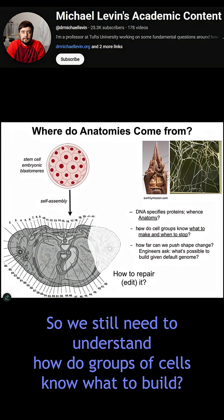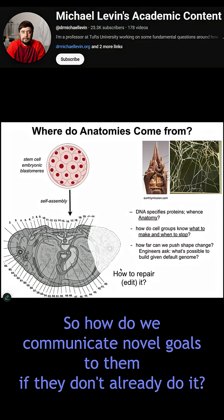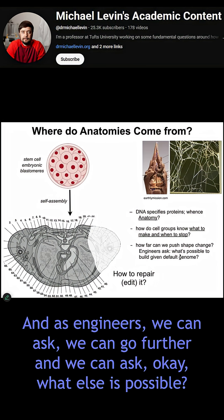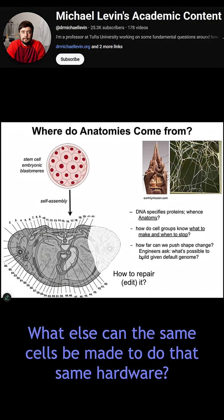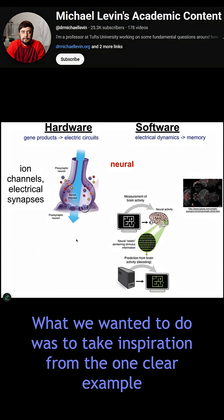So we still need to understand: how do groups of cells know what to build? How do they know when to stop? If something is damaged, how do we ask them to repair it? How do we communicate novel goals to them if they don't already do it? And as engineers, we can go further and ask, what else is possible? What else can the same cells be made to do with that same hardware? The beauty of software is that it gets the same hardware to do different things.